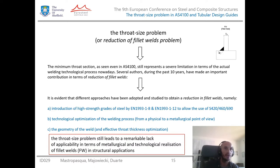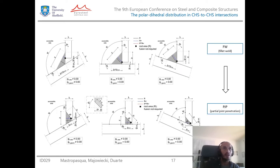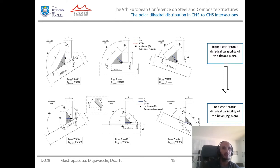The throat size problem still leads to a remarkable lack of applicability in terms of metallurgical and technological realization of fillet welds, particularly in structural applications, especially when over-strength criteria are applied. Adding to this is the issue related to the continuous variability of the dihedral angle in the tubular intersection. This represents a leap between a fillet weld solution and a partial joint penetration solution — essentially a leap from continuous variability of the throat plane to continuous dihedral variability of the beveling plane, moving from a manual process to an automatic numerical control process.